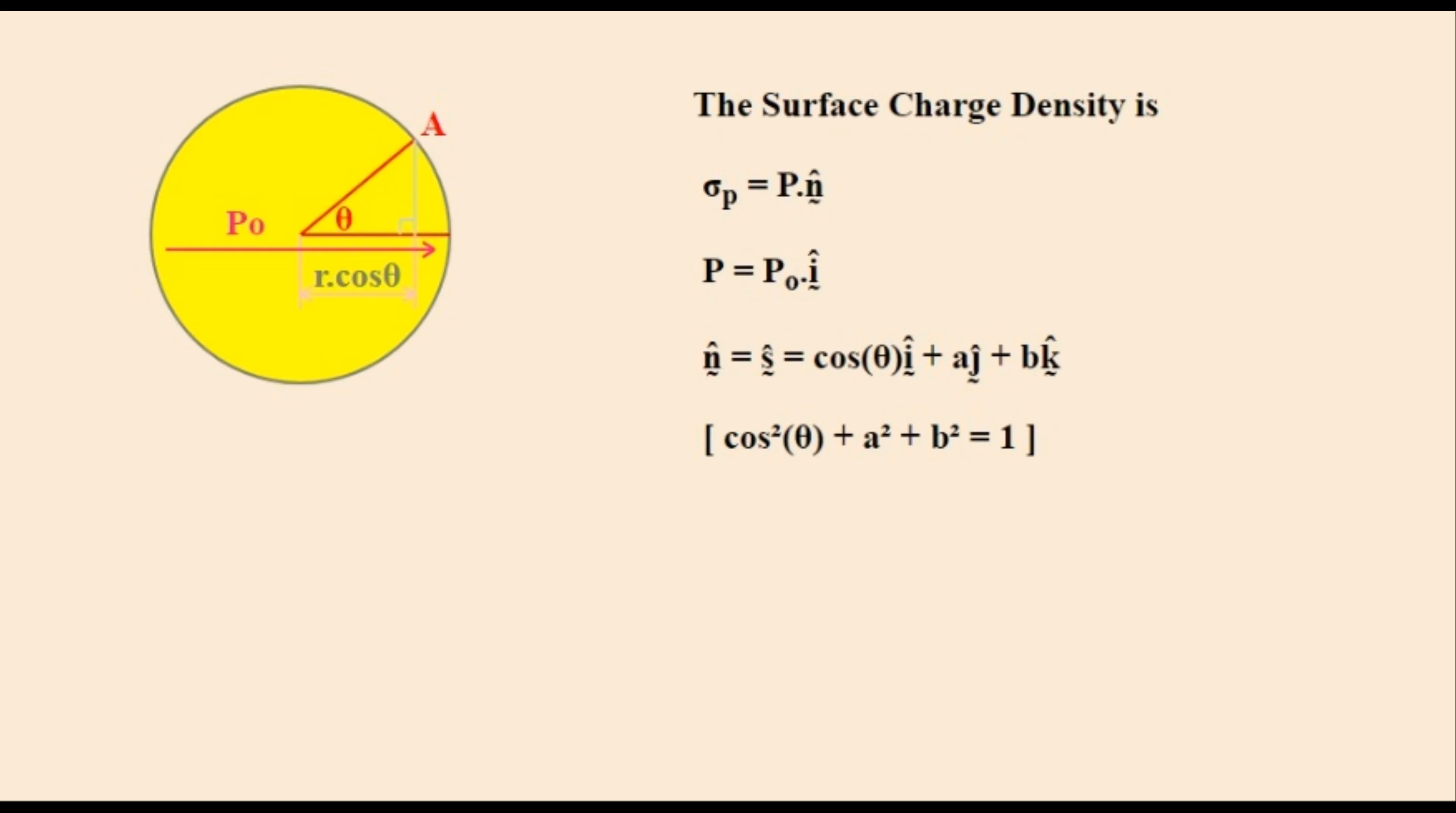Having a cosine theta term for its direction I. And having arbitrary amounts of A and B in directions J and K. It doesn't matter what A and B are since they will be discarded by the dot product rule anyway. But they do all obey Pythagoras's rule as shown below.